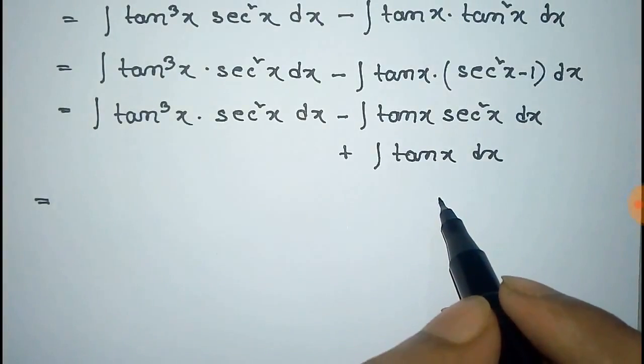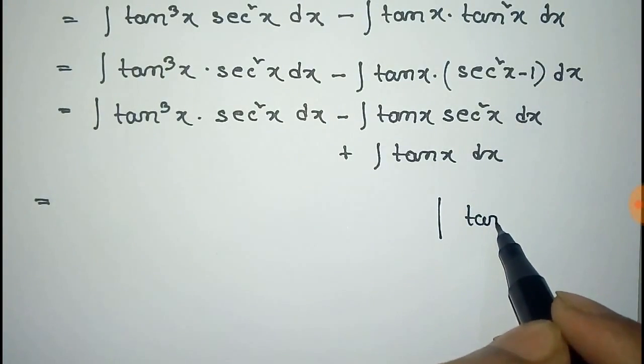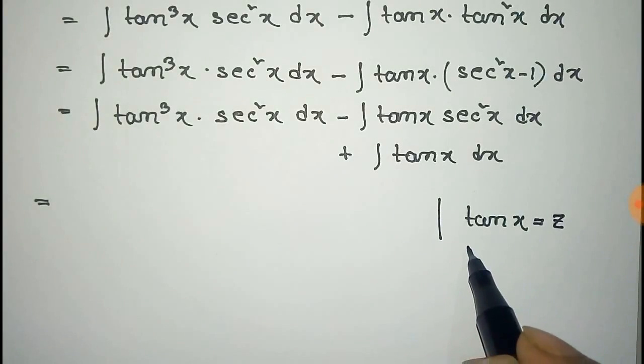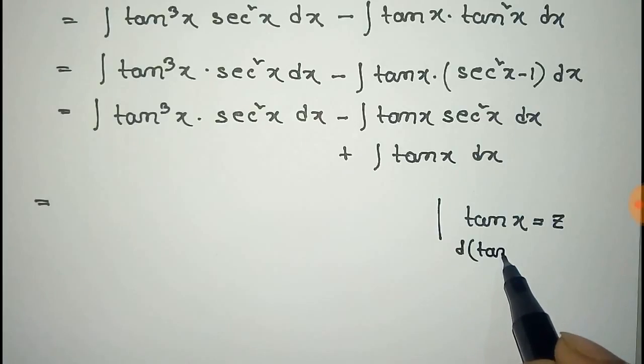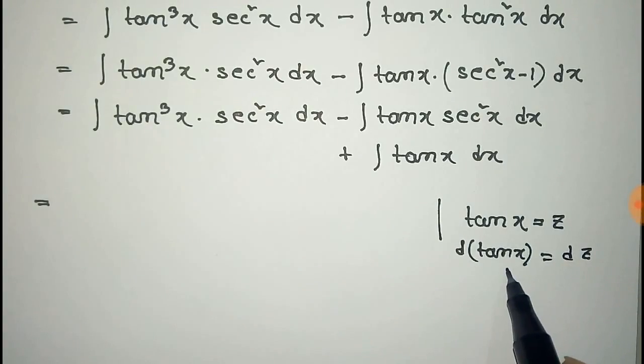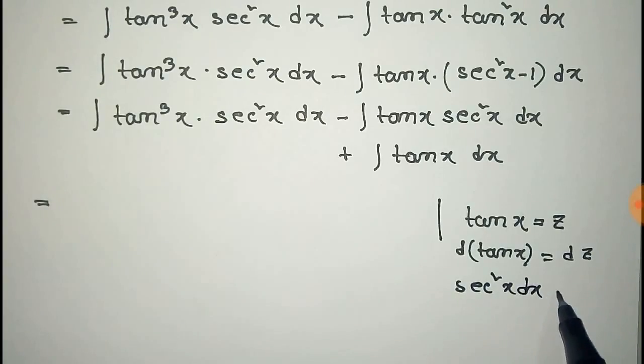Now we take this tan x is equal to z. So we have to derivative on both sides. Then derivative of tan x is equal to derivative of z that is dz. So it will be sec square x dx equal to dz.